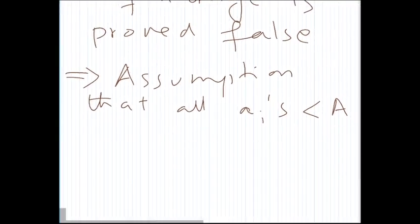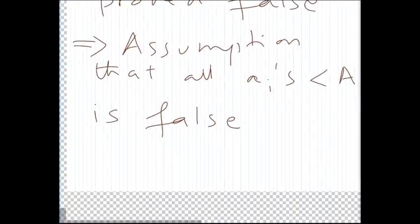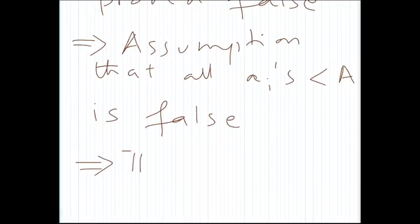is false—which means there is at least one ai, which ai means any one a1, a2, up to an, that is greater than or equal to A.